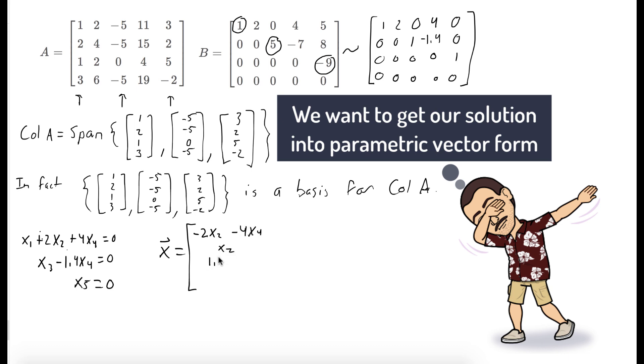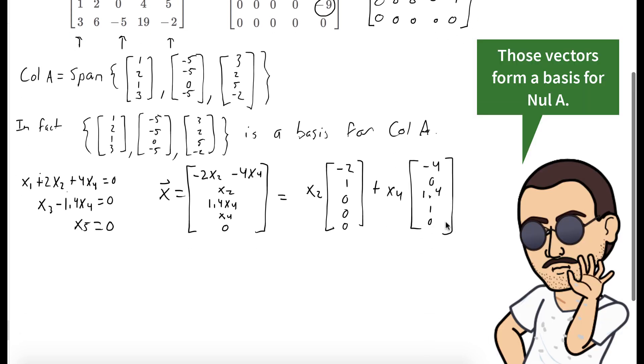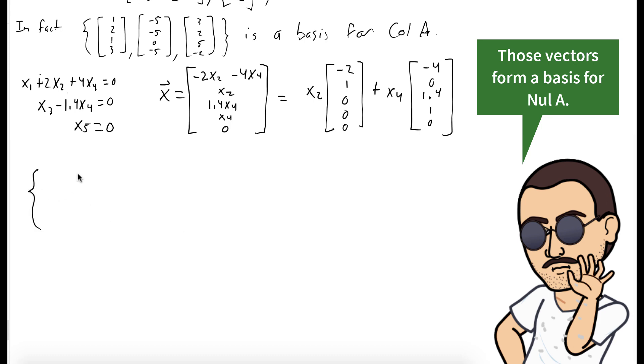And we'll put our solution into parametric vector form. We can break up x in terms of the free variables. So it's x2 times (-2, 1, 0, 0, 0) plus x4 times the vector (-4, 0, 1.4, 1). And those two vectors are a basis for null A.